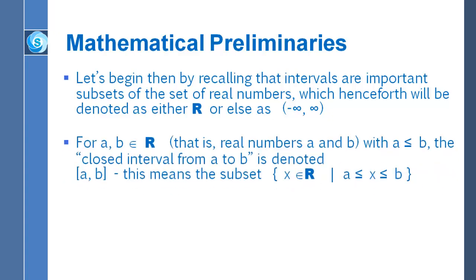Now if you have two real numbers A and B — this is literally read as A and B being elements of the set of real numbers — suppose we have A and B elements of R with A less than or equal to B. Then we can talk about the closed interval from A to B, which simply means the set of all real numbers between A and B, including A and also including B. The standard notation for that interval is left square bracket, A, comma, B, right square bracket. You've likely encountered that notation in a pre-calculus or calculus course.